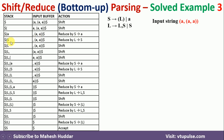The input buffer remains the same. Now looking at the stack, S can be reduced to L. So we apply reduce L→S. We cannot apply any rule to opening parenthesis and L together, so we shift the next token, comma. The stack now contains (L, and the remaining input is in the buffer.